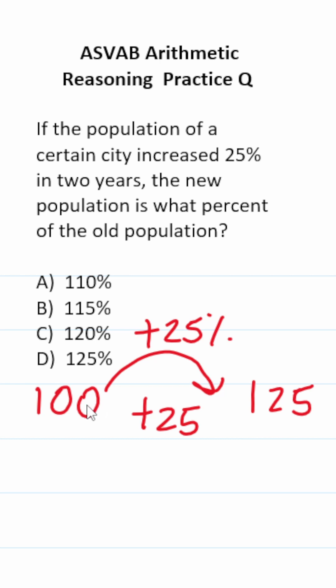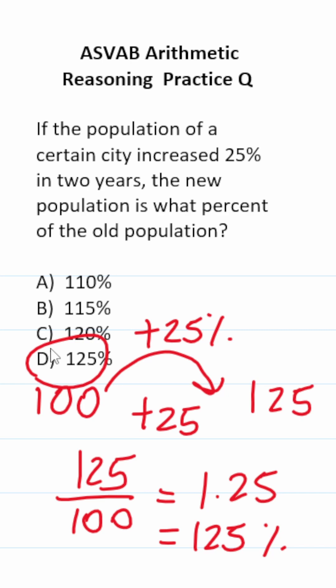The population went from 100 to 125 people. What percent is that of the old population? That's 125 divided by 100, which is 1.25. And 1.25 is the same thing as 125%. The answer is D.